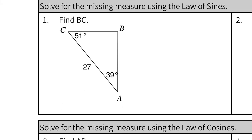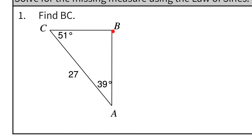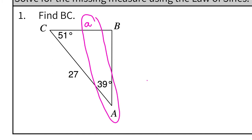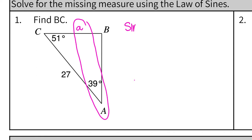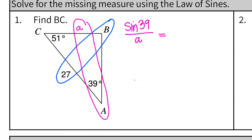Let's look at our first example. It says find BC. So B to C is this side here, but it's across from capital A, so I'm going to label that as little a. Since I need to solve for that, I need to include that as a fraction — sine of the opposite angle, so sine 39 over little a. Now we need one where we know both the side and the angle across. The only other side we have is 27, so I have no choice but to use B, but we don't know that angle yet. It's easy to find — all triangles are always 180. Subtract the two we already know and that gives us 90, so angle B is 90 degrees.